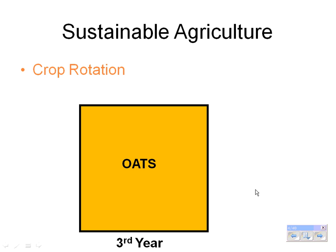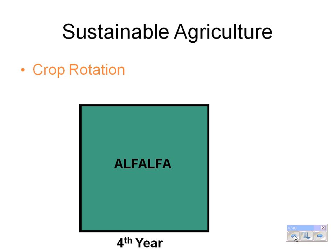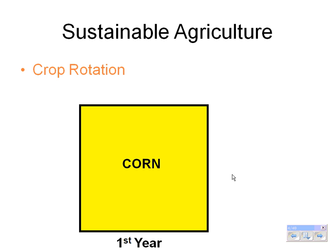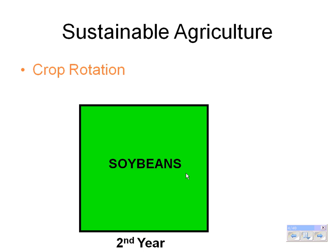Another reason to use crop rotation is that different crops use different minerals and nutrients from the soil. For example, if you grow oats one year, you may grow alfalfa the next. Many crops that are legumes, like soybeans, have nitrogen-fixing bacteria that live in the roots and fix atmospheric nitrogen into more usable forms, actually putting nitrogen back into the soil.